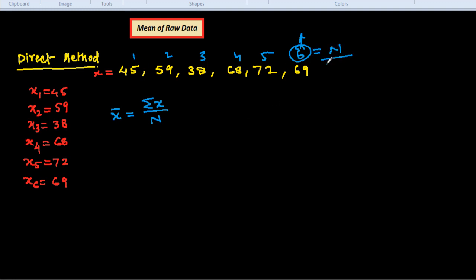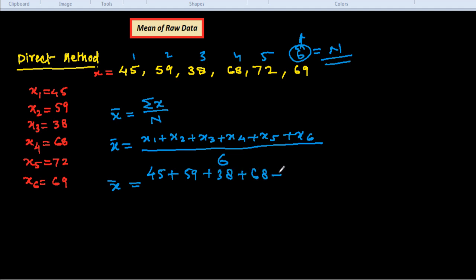So x̄, if we denote, summation of x is x1 + x2 + x3 + x4 + x5 + x6. Since the number of terms is 6, we have to put here 6 instead of N. So x̄ = (45 + 59 + 38 + 68 + 72 + 69)/6.